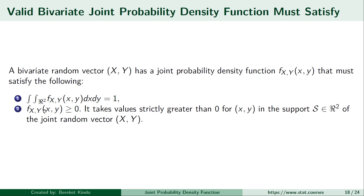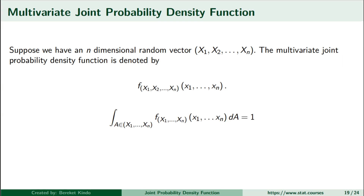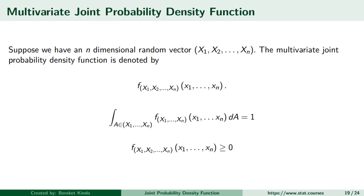We can extend these ideas to the joint probability density function of more than two random variables. Suppose we have an n-dimensional random vector (X₁, X₂, ..., Xₙ). The multivariate joint probability density function is denoted f(x₁, x₂, ..., xₙ), where the lowercase x's are realizations of the random vector. This multivariate joint PDF must integrate to 1 — the multivariate integral with respect to all individual components must equal 1 — and it must take values greater than or equal to zero.